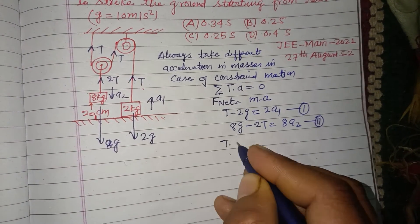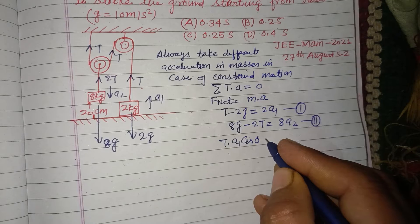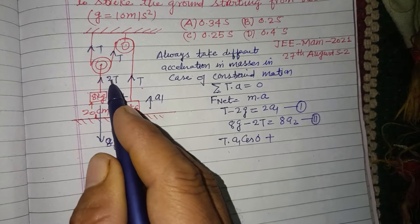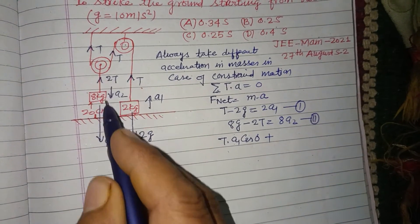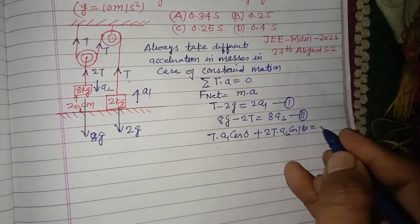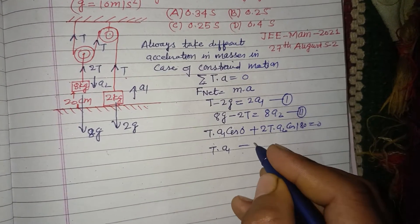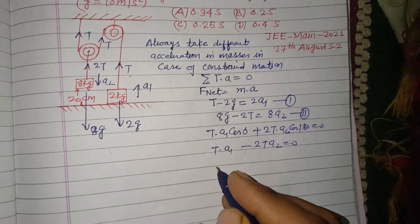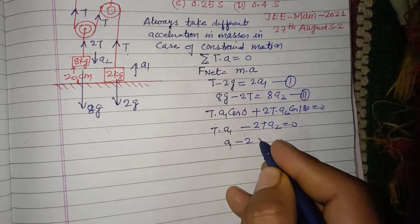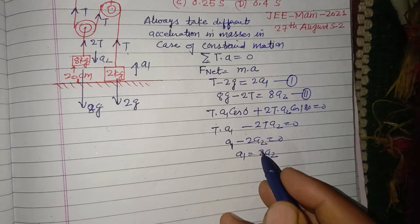Using the constraint equation sigma T·a = 0: the angle between T and a1 is 0°, so T·a1·cos0 plus 2T·a2·cos180° equals 0. Since cos180° = -1, this gives T·a1 minus 2T·a2 = 0. Dividing both sides by T, we get a1 minus 2a2 = 0, which means a1 = 2a2.